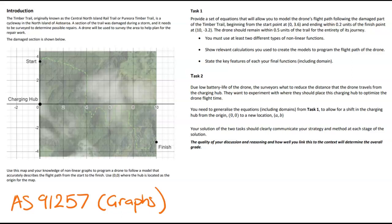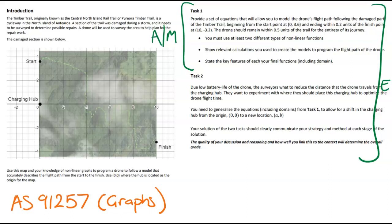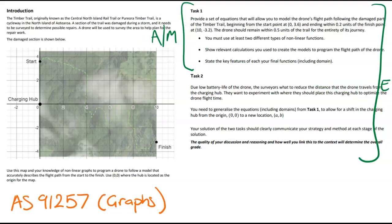Hey everybody, this is a practice internal for the graphs level 2 calculus standard and this one's all about a timber trail. If you're unfamiliar with the question, have a pause and a read. This video we're going to chat about section or task number one, which is the achieved and merit stuff. Later on in a separate video I'm going to do another one that goes through everything from start to finish at an excellence level. The key thing to note is the approach for achieved and merit is very different to the approach needed for excellence.